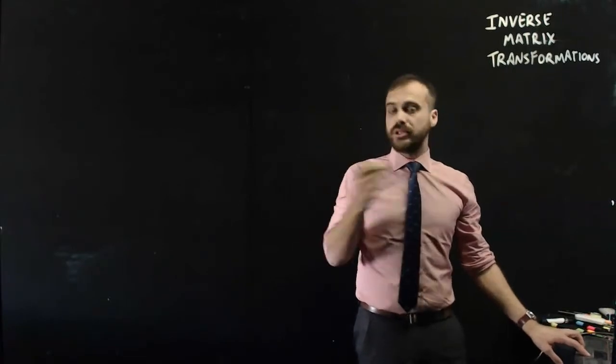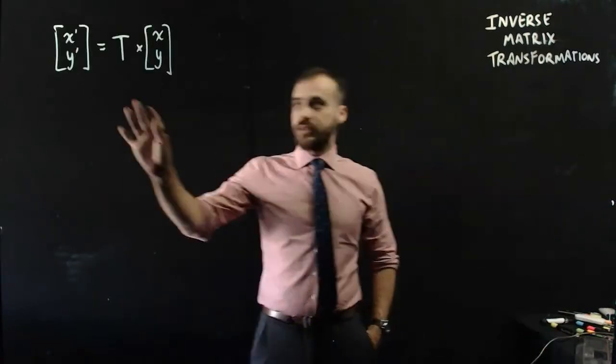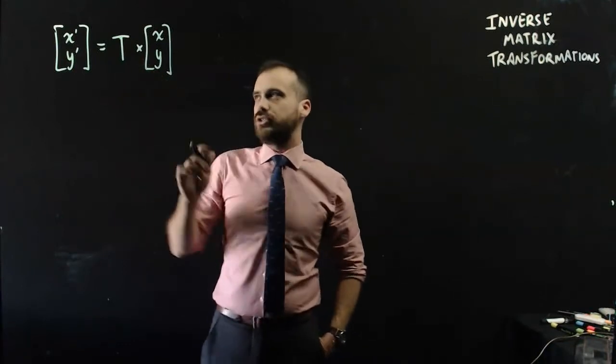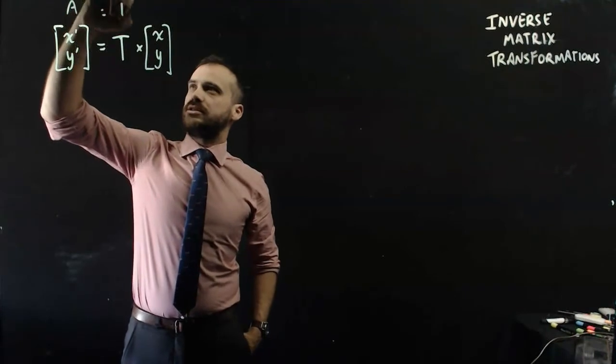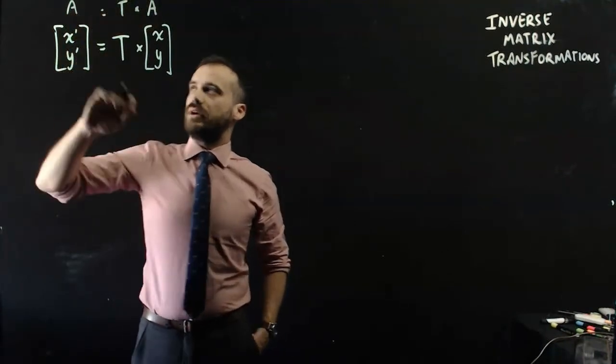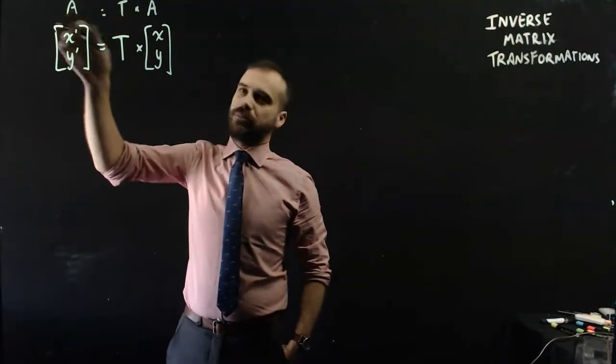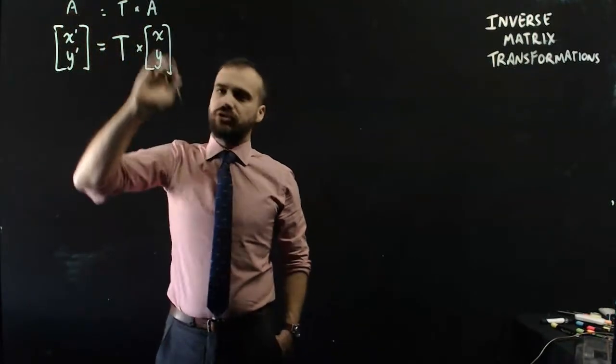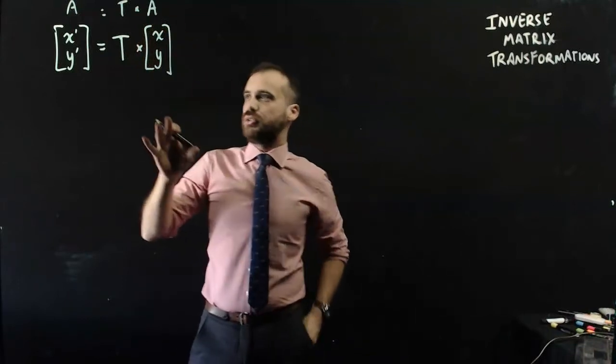Well, let's start with the formula that we've been working with so far. So the image is equal to the transform matrix times the original object. Now we can use a shorthand for that. The image of a point, not the transpose of a matrix. The image of a point is equal to the transform matrix times the original object.